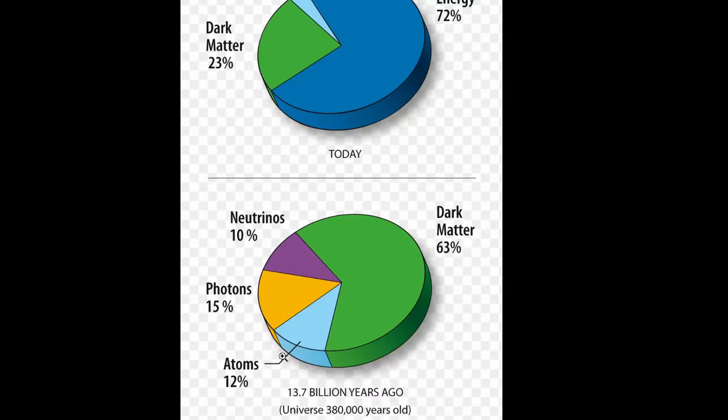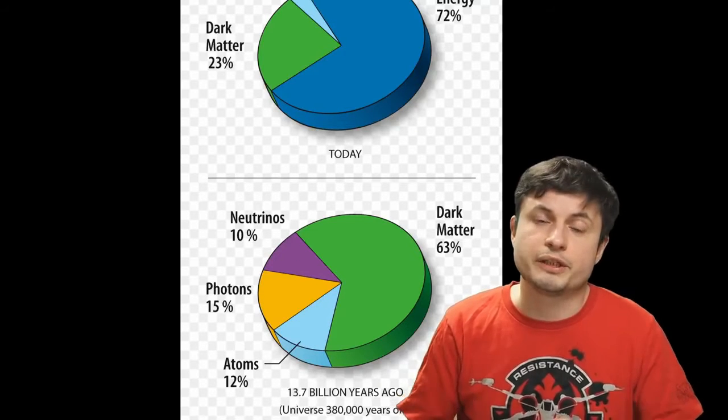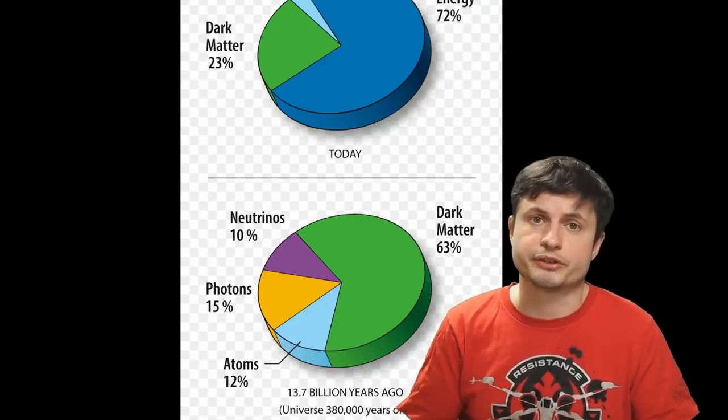And in case you were curious, about 12% of regular matter are atoms, 15% are photons, and about 10% are neutrinos. At least that's what it used to be like when the universe just started.